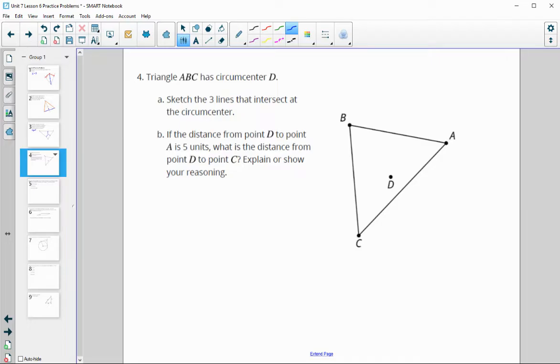In number four, triangle ABC has a circumcenter at D. Sketch the lines that intersect at the circumcenter. A circumcenter is where all of the perpendicular bisectors of the sides meet. These are going to be perpendicular segments at the midpoint, so they split these sides into equal pieces. It'll be perpendicular and split this in half, perpendicular at the midpoint.